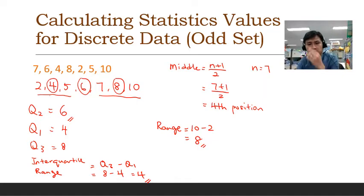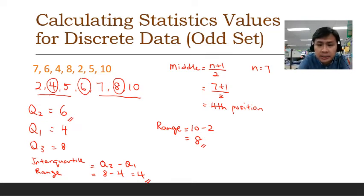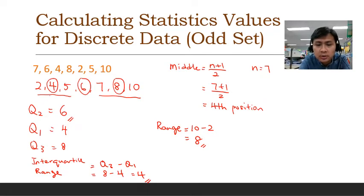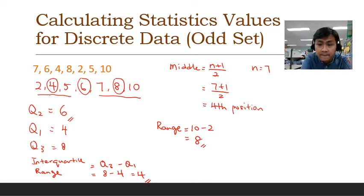In a discrete data set, the important values are: the median represented by Q2; the upper and lower quartiles represented by Q3 and Q1 respectively; the interquartile range calculated by Q3 minus Q1; and the range calculated by taking the maximum minus the minimum value.